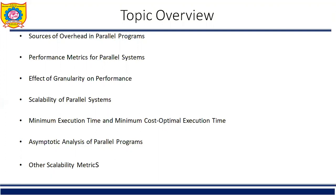A parallel system is the combination of an algorithm and the parallel architecture on which it is implemented. In this chapter, we study various metrics for evaluating the performance of a parallel system. We are going to learn the following topics in unit number 4: sources of overhead in parallel programs, performance metrics of parallel systems, effects of granularity on performance, scalability of parallel systems, minimum execution time and minimum cost optimal execution time, and asymptotic analysis of parallel programs and other scalability metrics.